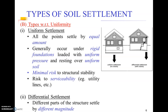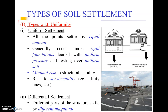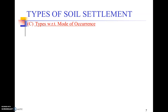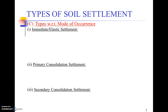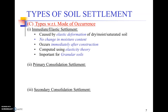Differential settlement occurs when different parts of a structure settle at different magnitudes, or some parts settle while others do not. This can happen with roads as well, where different loading distributions and soil behavior cause uneven settlement. Settlements can also be characterized by mode of occurrence: immediate settlement, which is elastic and recoverable; primary consolidation settlement, which occurs over time; and secondary consolidation settlement, also called creep, which happens long after construction.